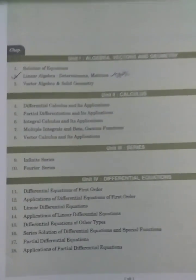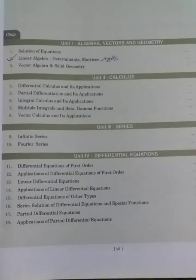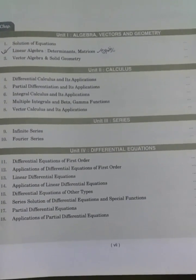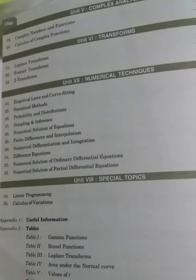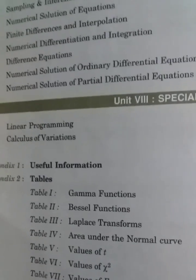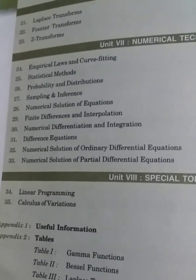The content in this book: you can see here Unit 1 is related to Algebra, Unit 2 is Calculus, Unit 3 is Series, and Unit 4 is Differential Equations. Unit 5 is Complex Analysis, Transforms and Numerical Techniques, and special topics like Gamma Function, Bessel Function, Laplace Transform, and areas. These are also given in this book.